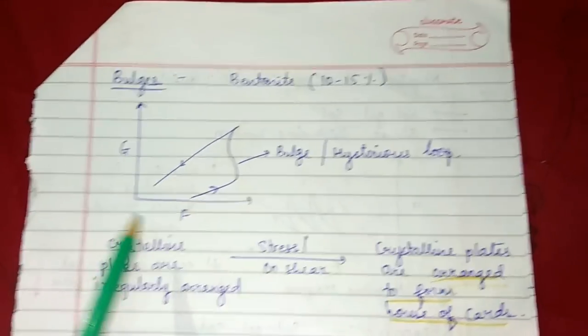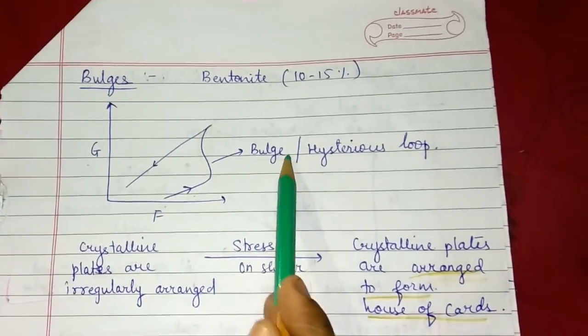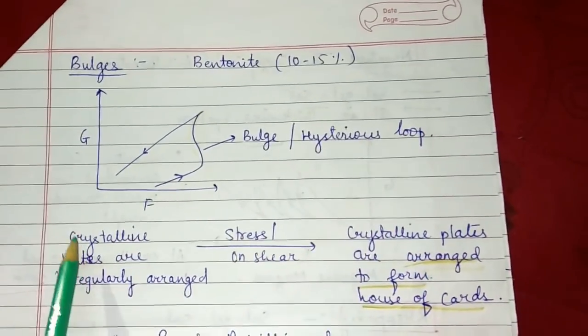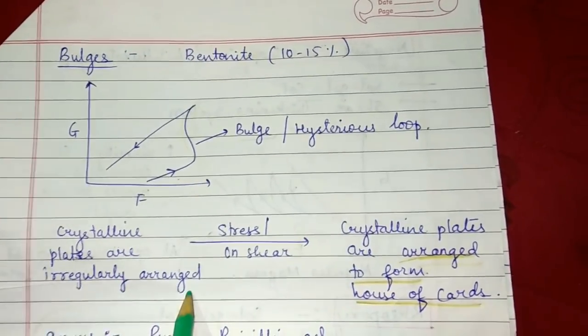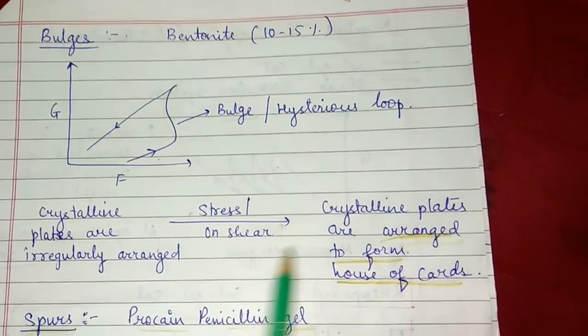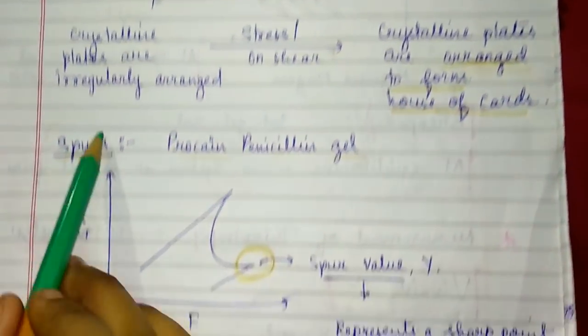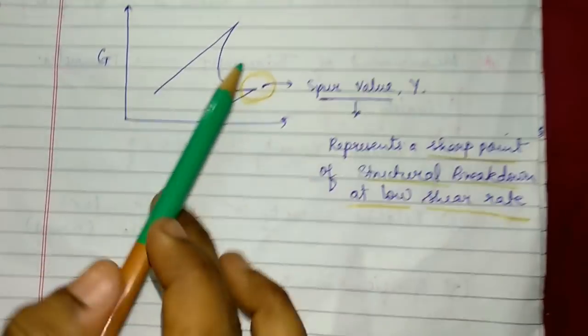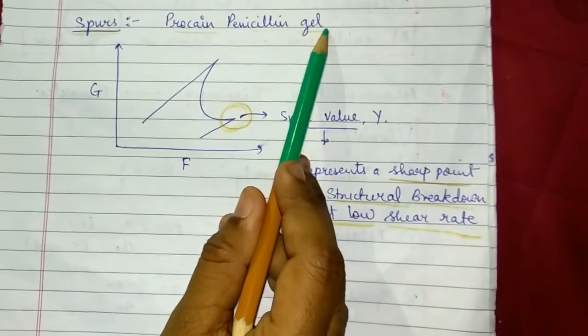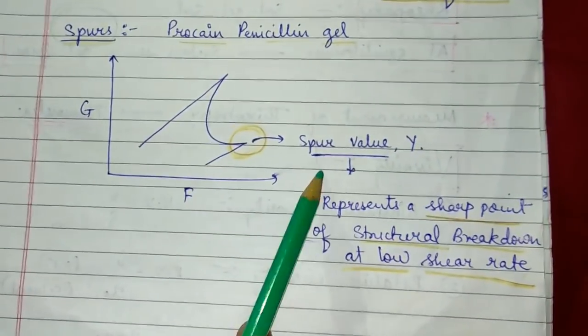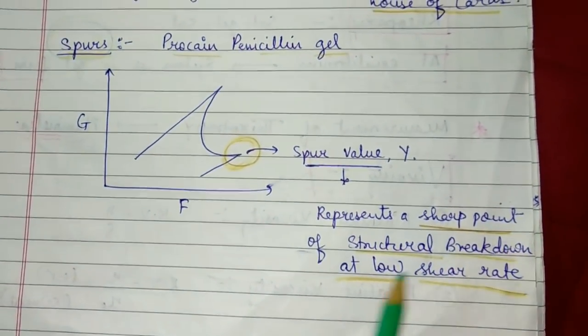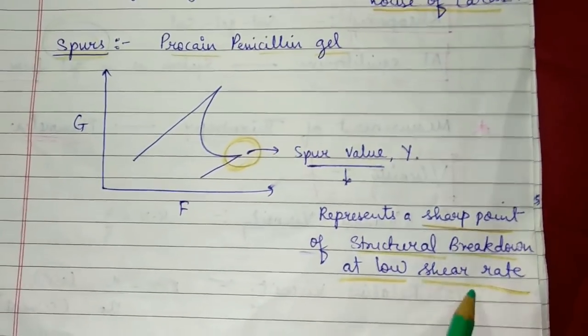Bentonite, under rate of shear and shearing stress, will form a bulge or hysteresis loop. When the crystalline plates are irregularly arranged under stress or shear, the crystalline plates are arranged to form a house of cards. Now there is spore formation, shown by procaine penicillin G. The spore formation represents a sharp point of structural breakdown at low shear rate.